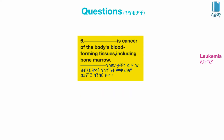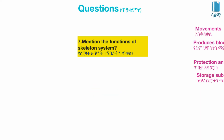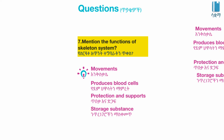The body's blood-forming tissues, including bone marrow, can be affected by cancer such as leukemia. The skeletal system functions to produce blood cells for protection and support.